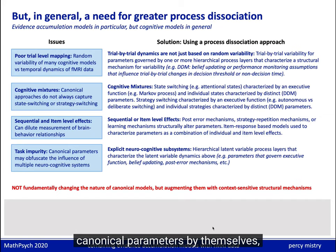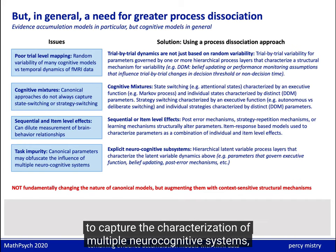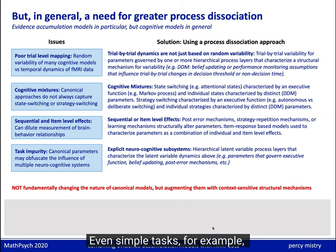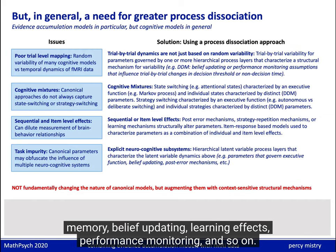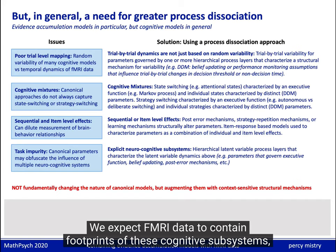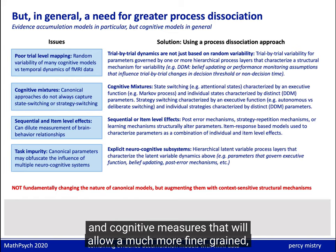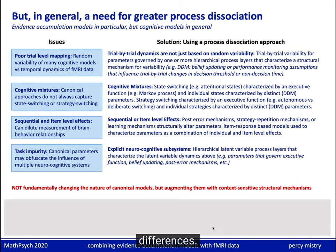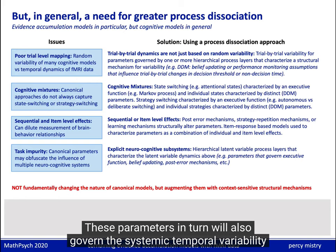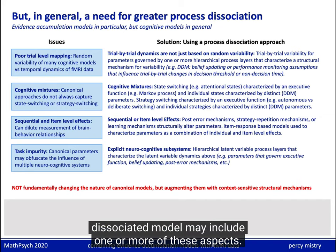Finally, canonical parameters by themselves, even if incorporated with trial-level systemic variability, may not be sufficient to capture the characterization of multiple neurocognitive systems. Even simple tasks might contain many different cognitive elements such as executive function, memory, belief updating, learning effects, performance monitoring, and so on. We expect fMRI data to contain footprints of these cognitive subsystems, but to allow capturing such functional resolution, we need corresponding behavioral or cognitive measures that allow a much finer-grained multidimensional functional characterization of individual differences. These parameters will also govern the systemic temporal variability in the dynamic DDM parameters. A precise dissociated model may include one or more of these aspects.